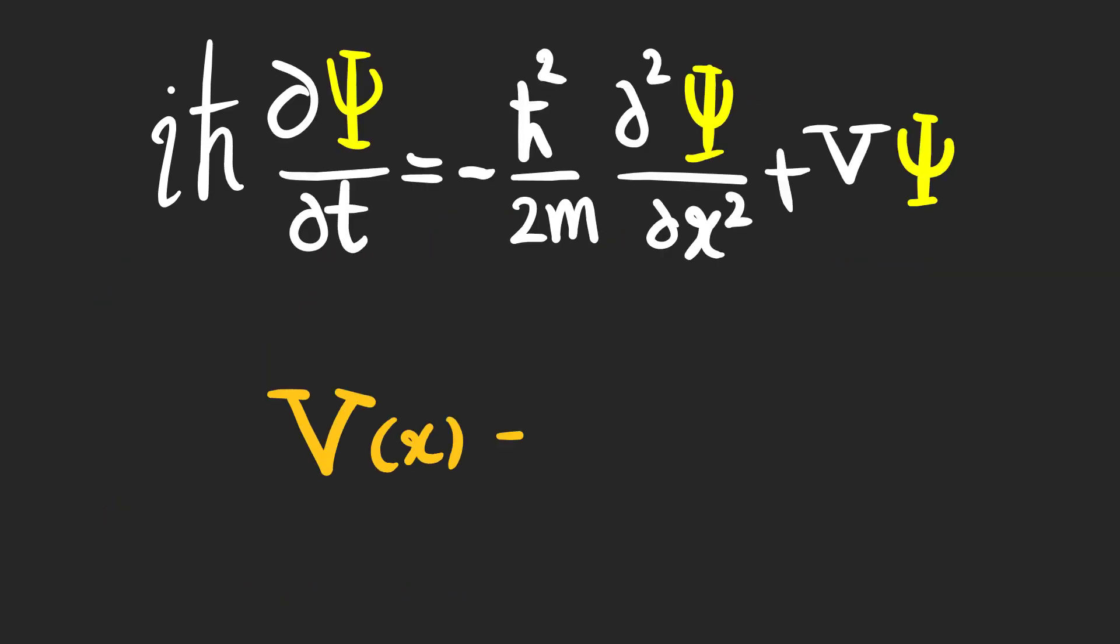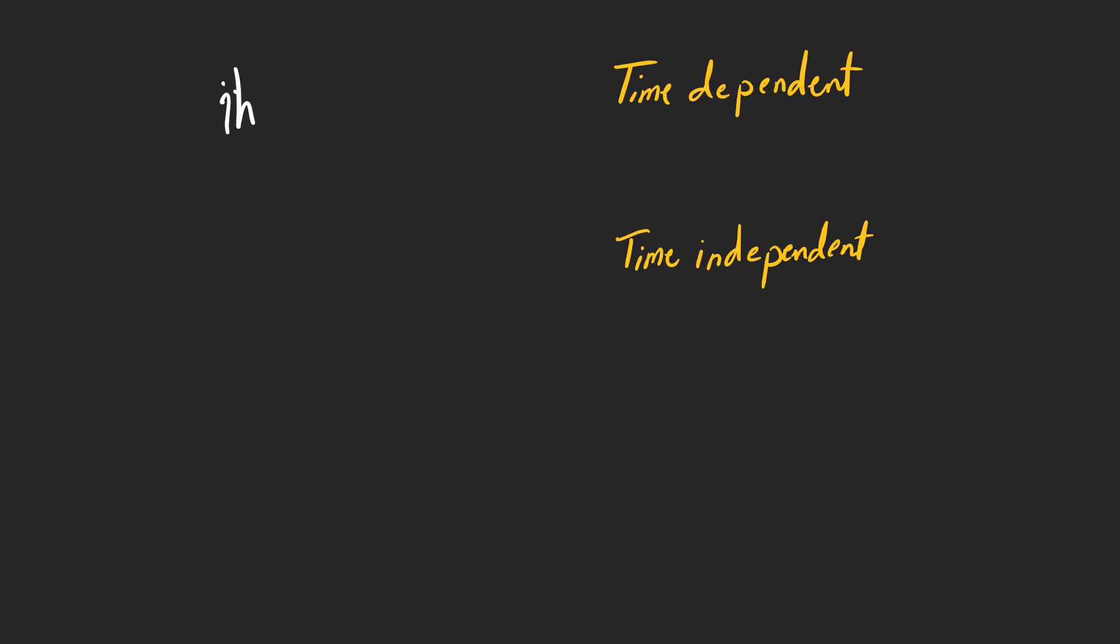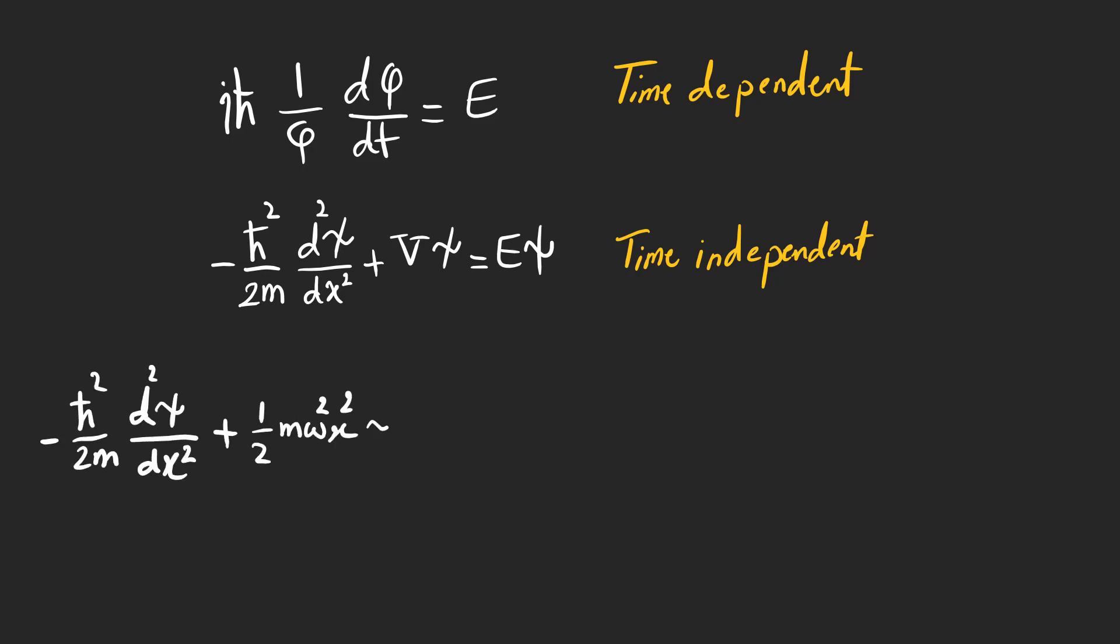Now it's time to solve the Schrodinger equation using this potential. We can separate the Schrodinger equation into two time-dependent and time-independent equations. And what we need to do is to solve the time-independent Schrodinger equation for this potential. It can be rewritten as this expression.